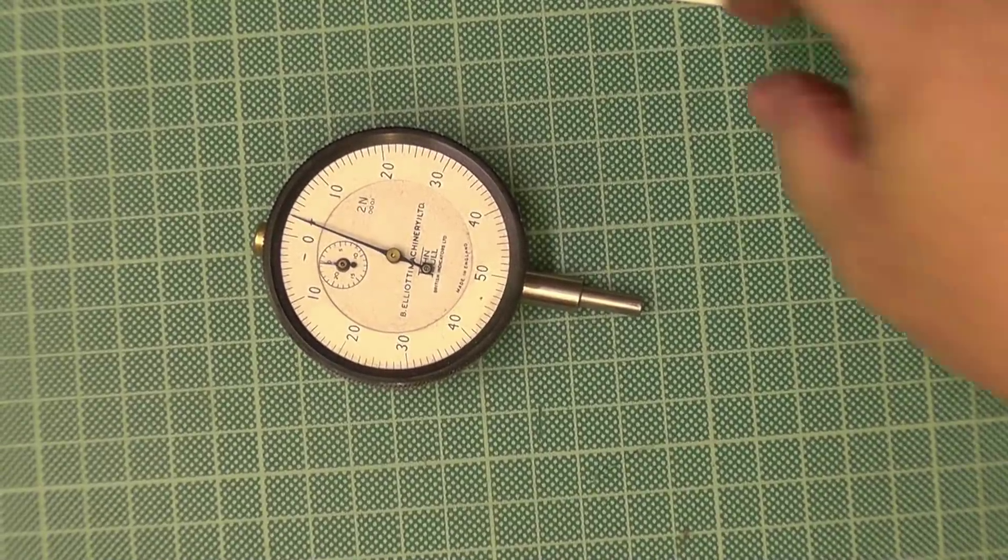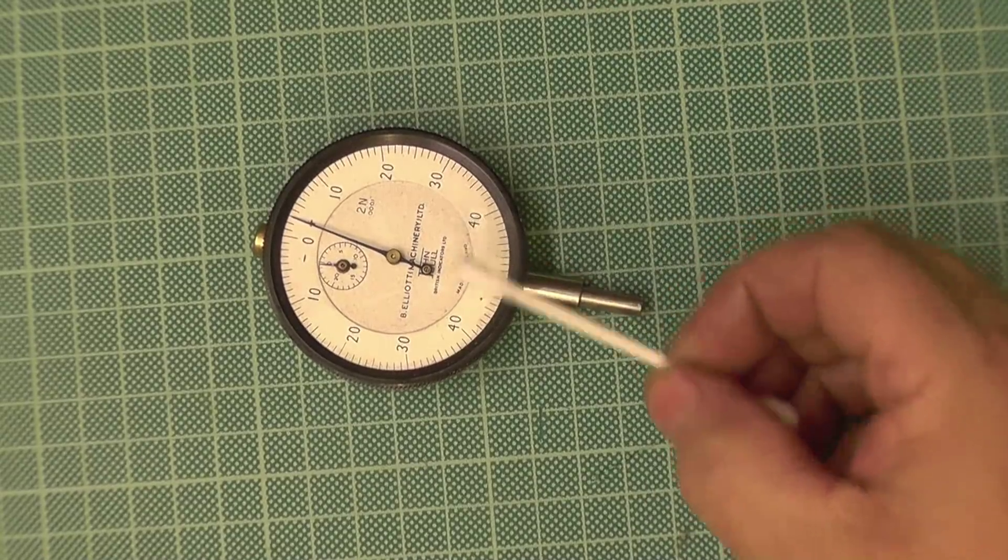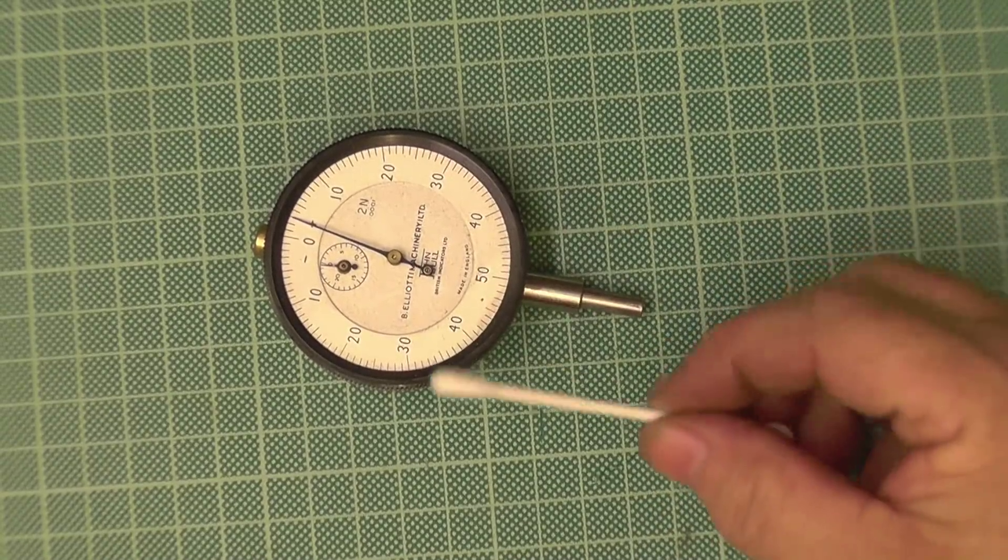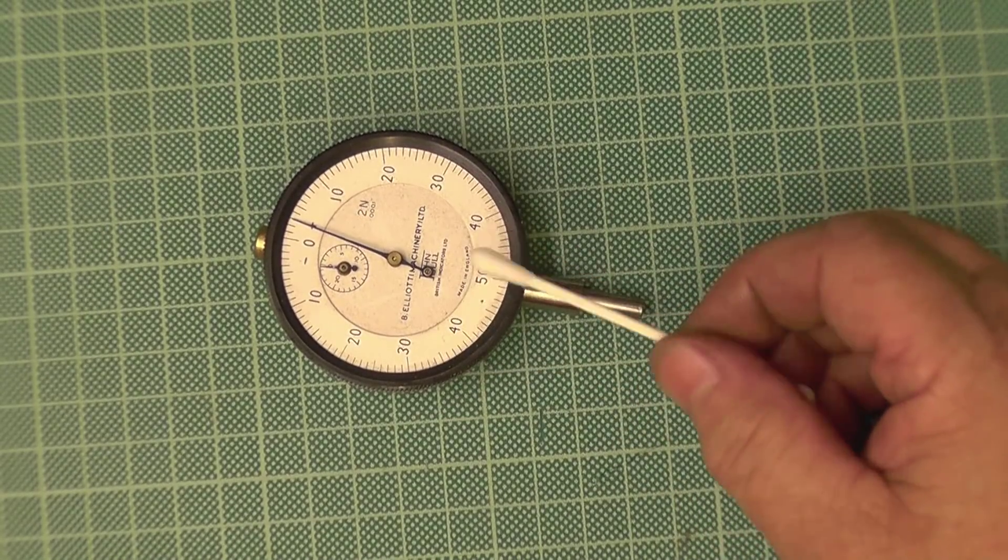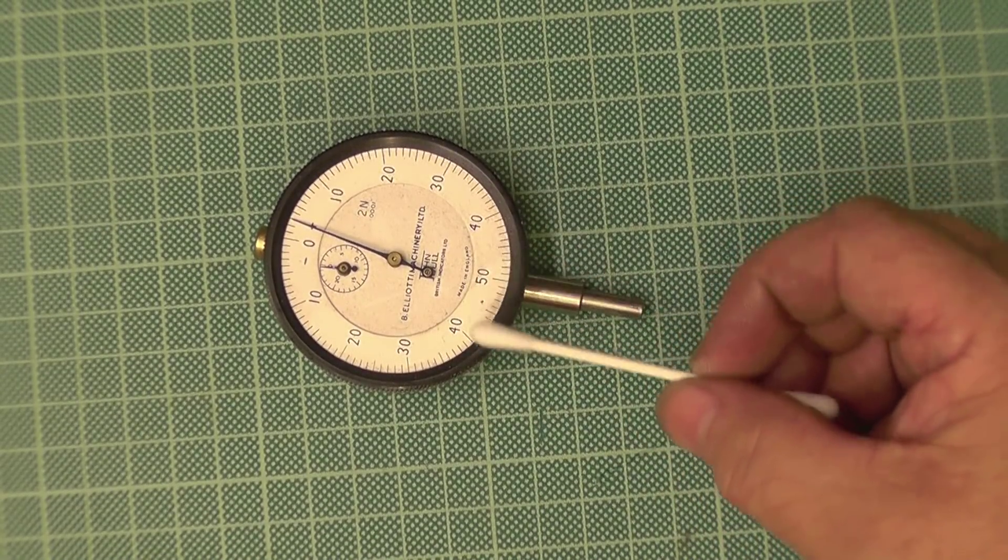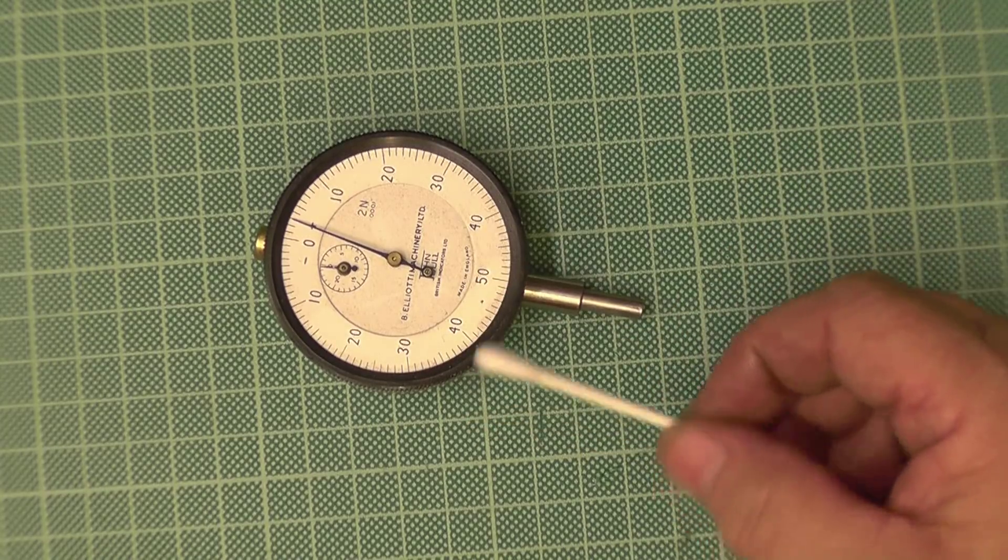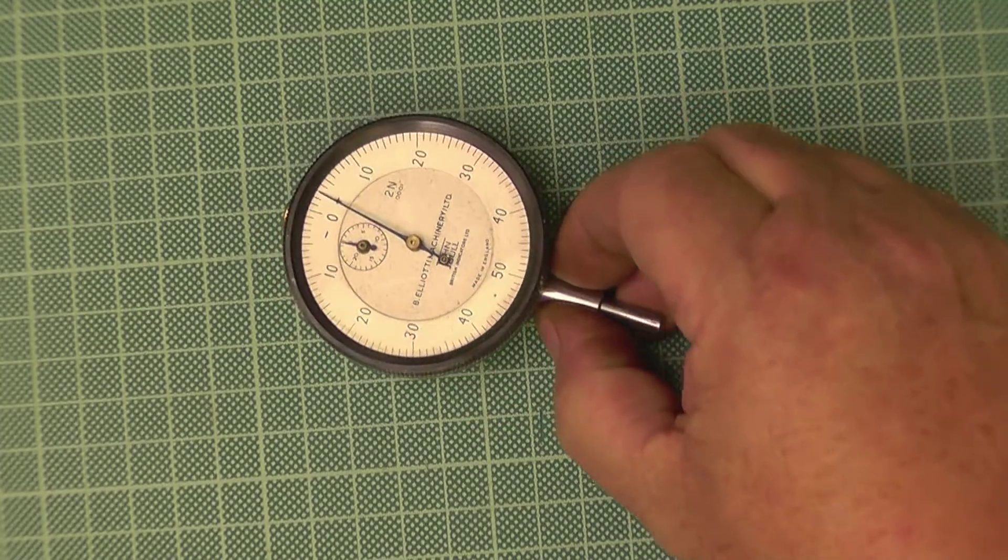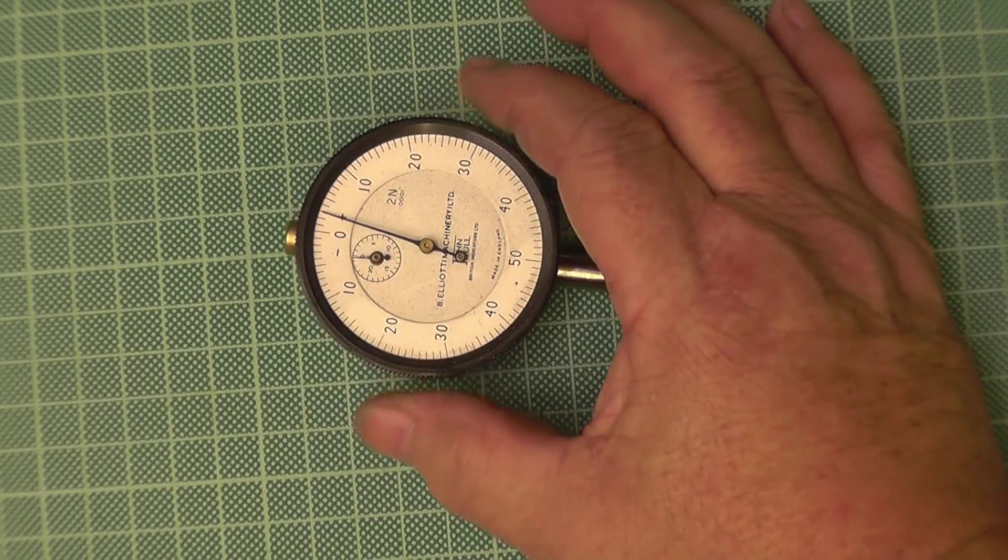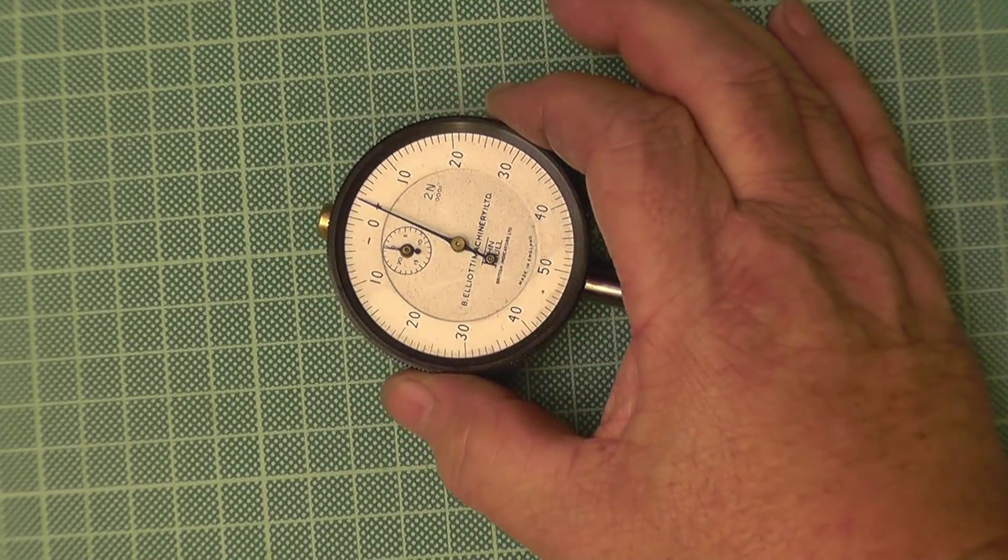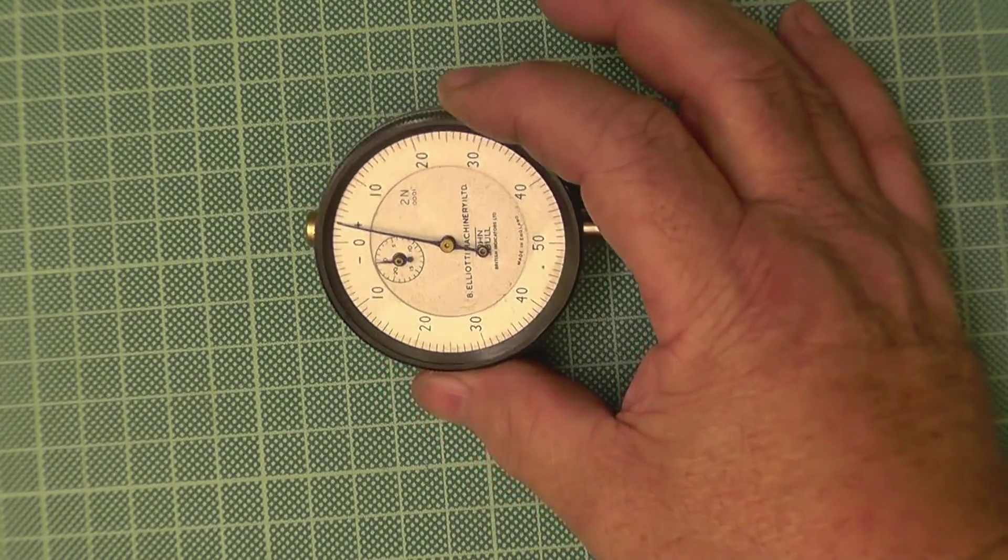Now what happens a lot with these is the lens doesn't get knocked off. What I tend to find is the plastic what the lens is made out of shrinks, then it just drops off. Then they just get hidden in draws. Now I don't know if you can see that well on the camera, but that lens, the face is absolutely covered in dirt, muck.